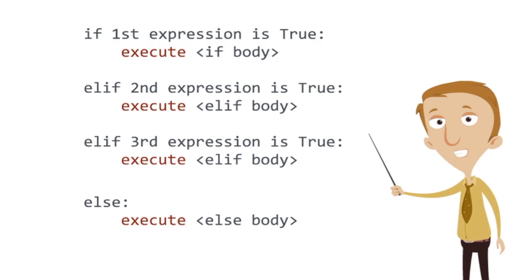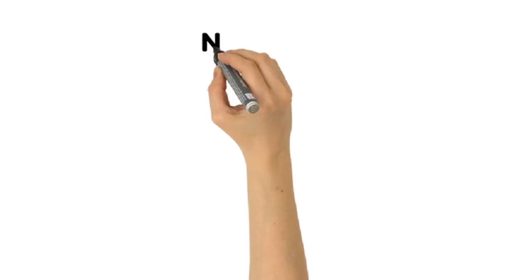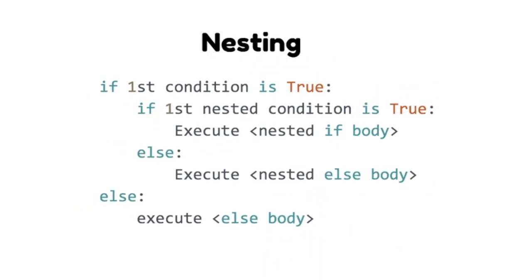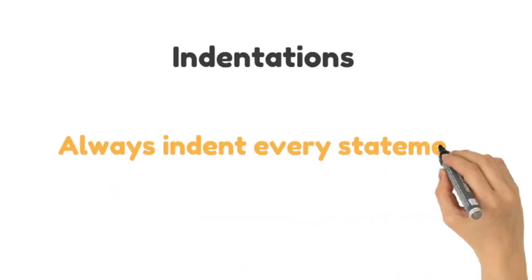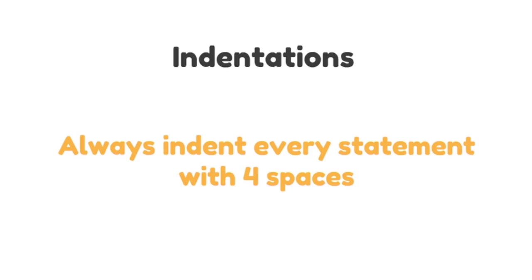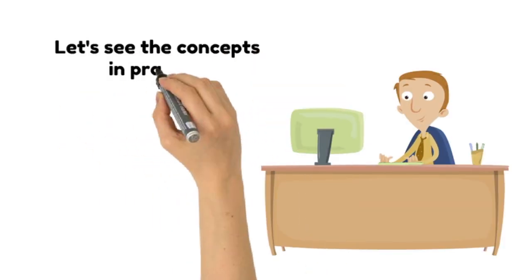In that case, we can keep adding elif clauses to keep meeting our condition requirements. We can also account for a decision within another decision — this is called nesting. We can basically have an if, elif, else statement inside another such statement. Any number of these statements can be nested under one another. Beware of one thing: indentations. You should always indent every statement after your if, elif, or else clause with four spaces. We will talk about indentations more during our practice session.